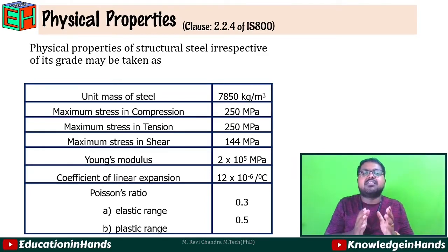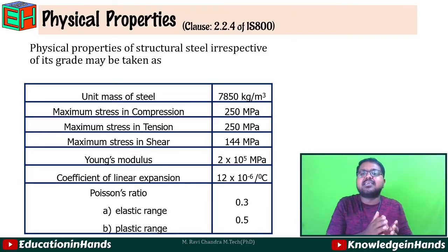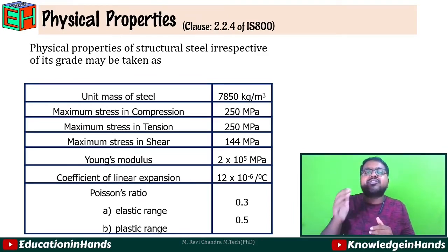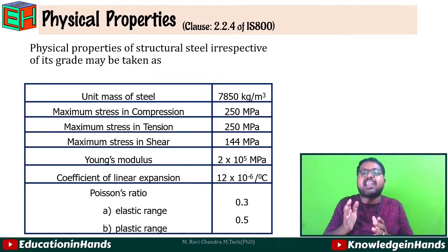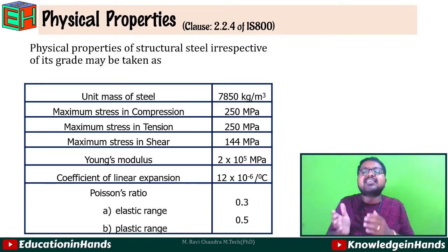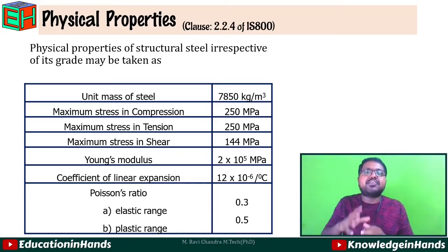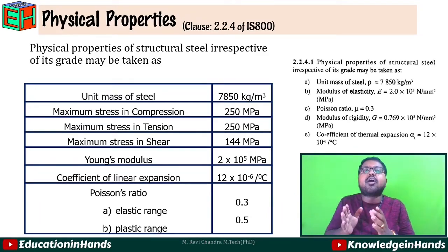Maximum stress in compression equals 250 MPa. Maximum stress in tension equals 250 MPa. Maximum stress in shear equals 144 MPa. Young's modulus or modulus of elasticity is 2×10⁵ MPa (i.e., 2×10⁵ N/mm²). The coefficient of linear expansion is 12×10⁻⁶ per degree centigrade. Poisson's ratio in the elastic range is 0.3 and in the plastic range is 0.5. These physical properties are given in IS 800 clause 2.2.4.1.